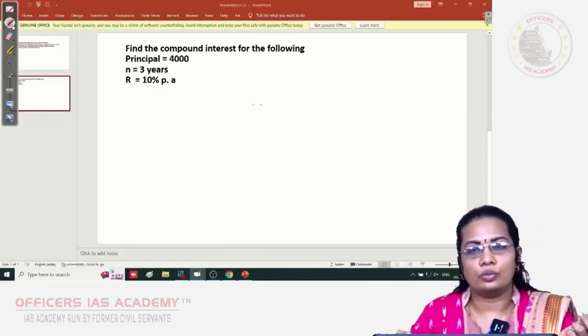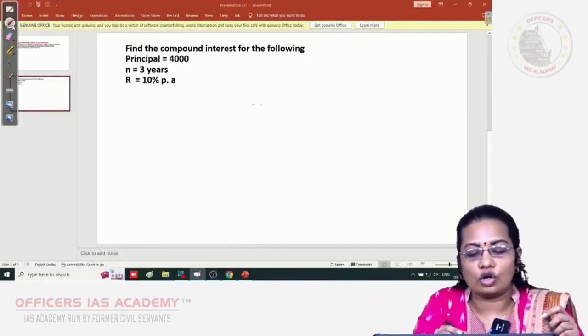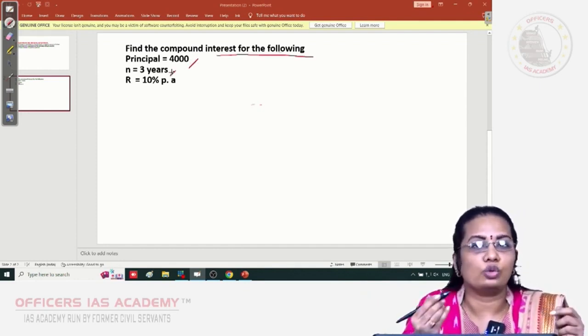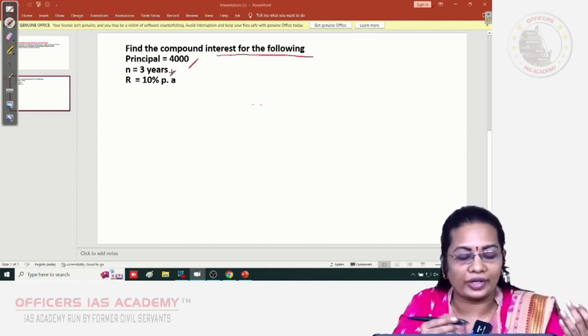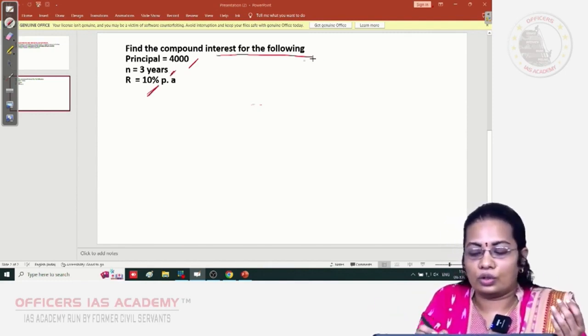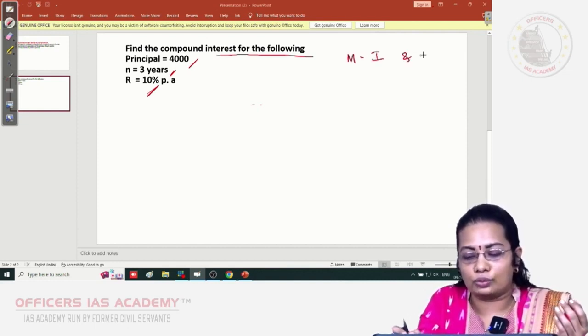In front of you one question is given: find the compound interest for the following. Principal is 4,000 rupees, n = 3 years, rate of interest is 10% per annum. We are going to solve this under method 1 and method 2.